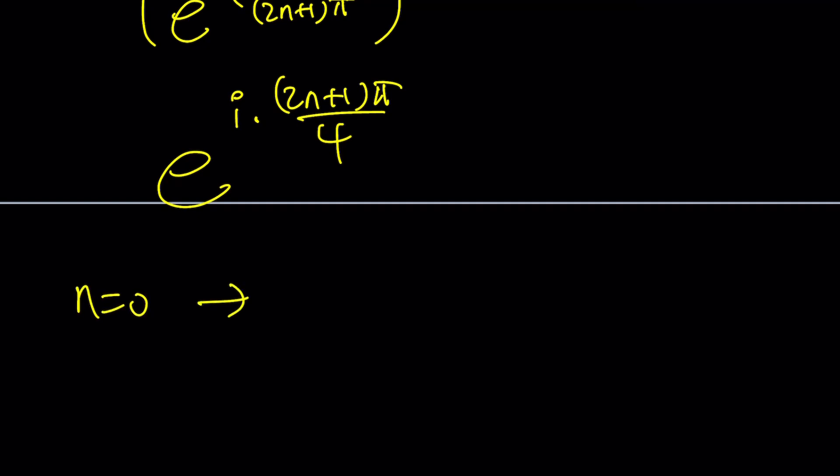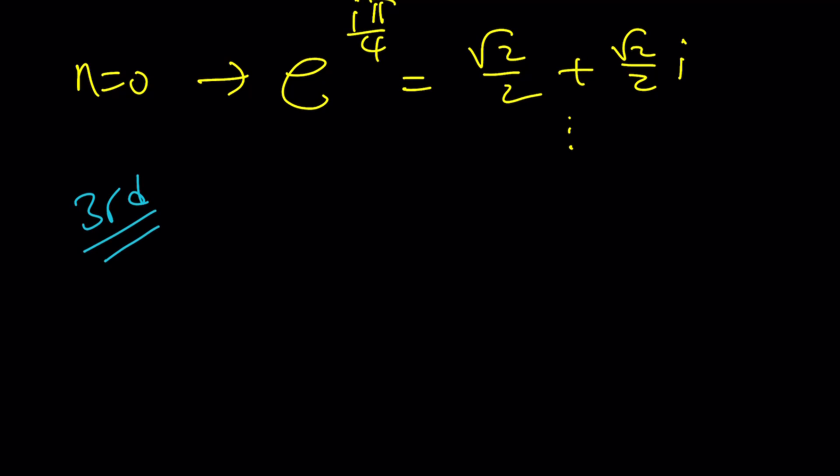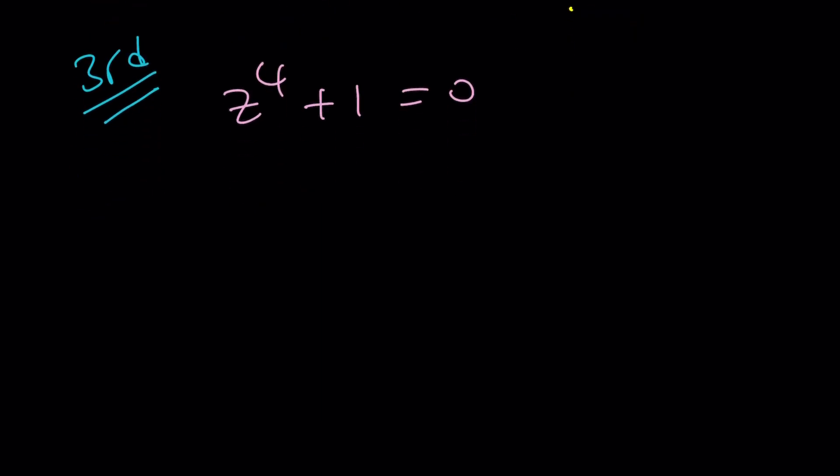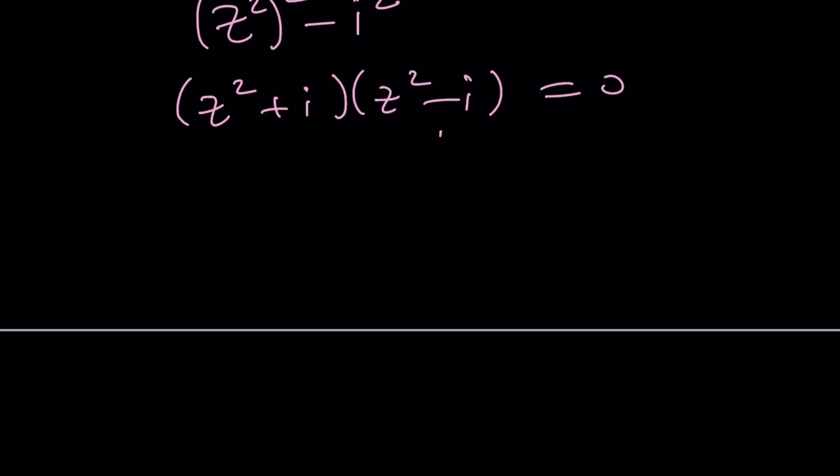For example, if n equals 0, you get e to the power i pi over 4, which is root 2 over 2 plus root 2 over 2i. The others follow similarly. Let's look at a third possibility. We could use a sum of two squares, considering this as z squared minus i squared. This will be z squared plus i and z squared minus i equals 0. From here, you're looking at square roots of i and square roots of negative i. Pretty much the same idea, just broken down into two pieces.